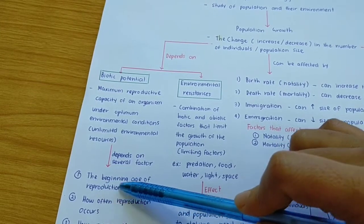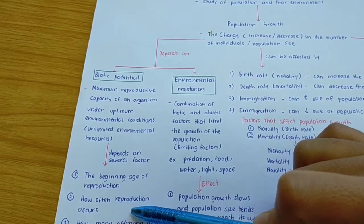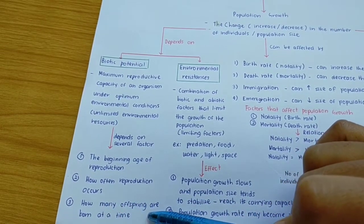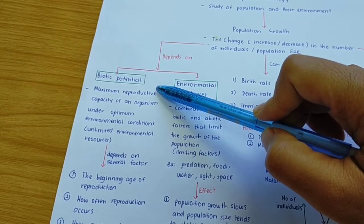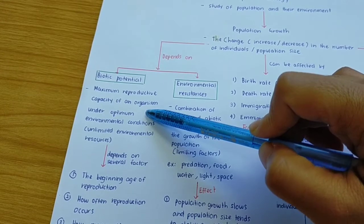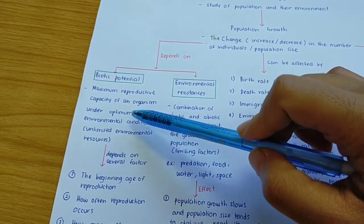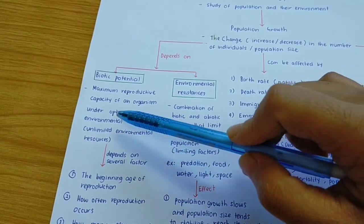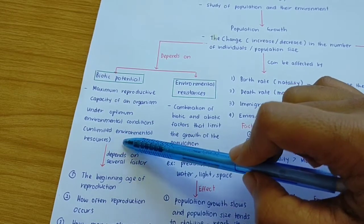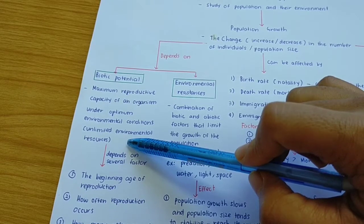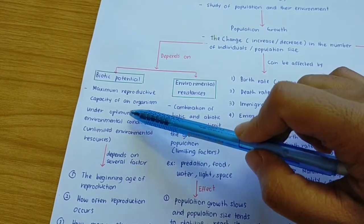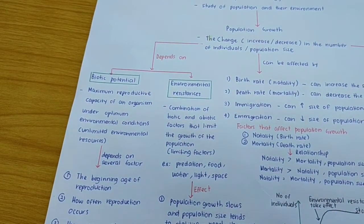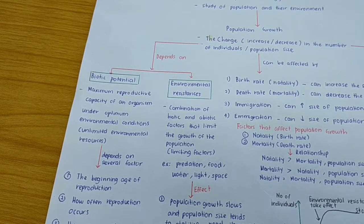Biotic potential depends on several factors: the beginning age of reproduction, how often reproduction occurs, and how many offspring are born at a time. Under optimum environmental conditions — for example, unlimited food and unlimited space — the tendency of the organism to undergo reproduction is increased. So when population size increases, we can say the biotic potential of the organism is at maximum.